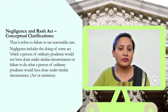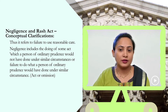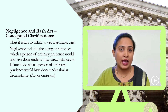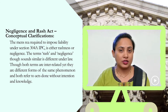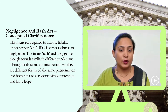Negligence also includes the doing of some act which a person of ordinary prudence would not have done under a similar situation, or failing to do something which a person of ordinary prudence would have done under that particular situation. Hence, negligence refers to both acts as well as omissions. The mens rea required to impose liability under Section 304A of the Indian Penal Code is either rashness or negligence. The terms rash and negligence, though they sound similar, have differences under the law. Though both terms are interrelated, they are different forms of the same phenomenon, and both refer to acts done without intention.